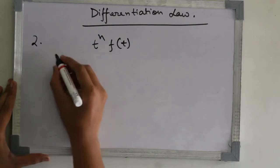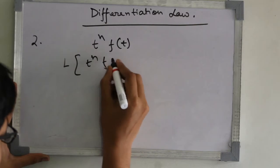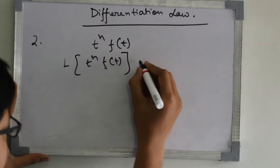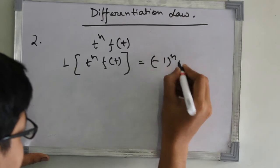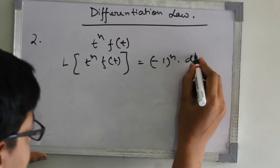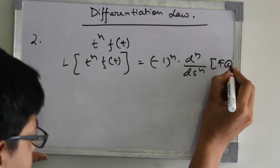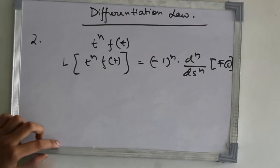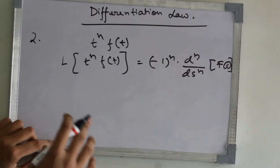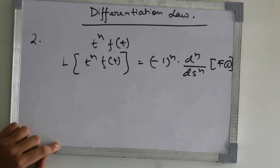The Laplace transform of t to the power n f of t equals minus 1 to the power n, d to the n ds to the n of f of s. I think you're getting this from this law.